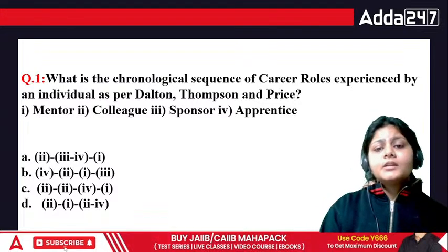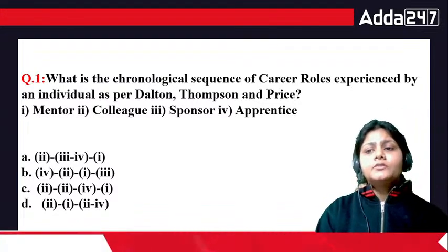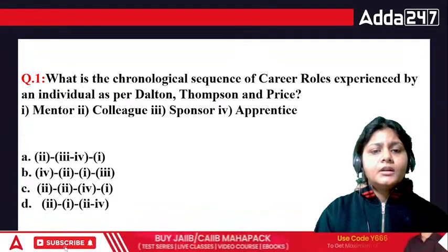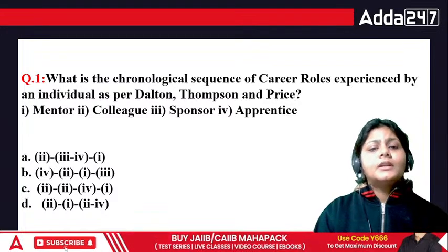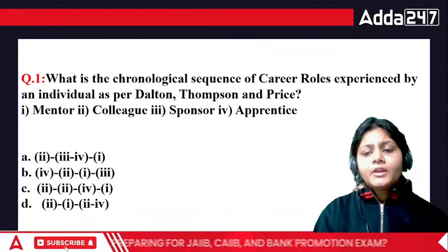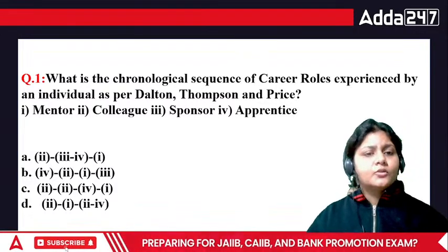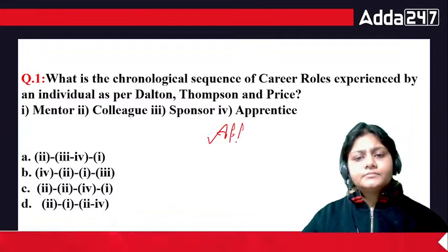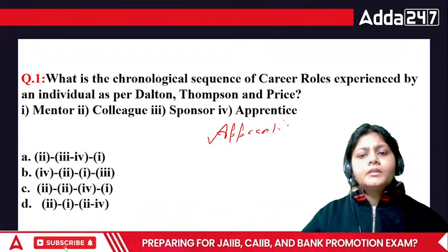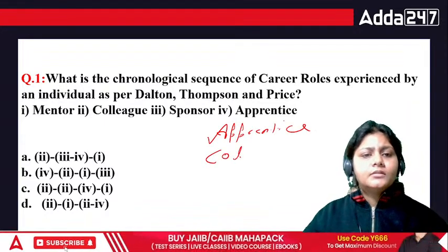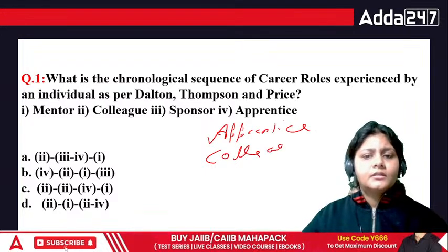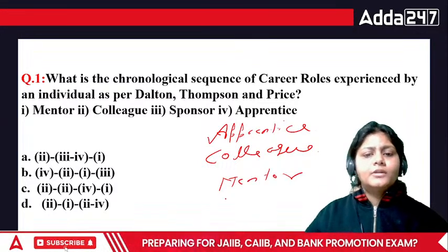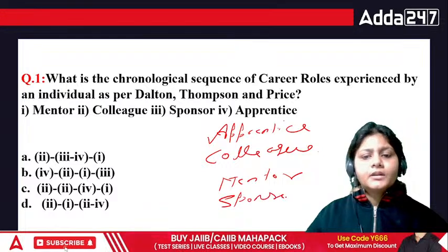This is the first question from Dalton, Thompson and Price. Dalton, Thompson and Price has given 4 types of career roles. Number 1 is Apprentice, number 2 is Colleague, number 3 is Mentor, and number 4 is Sponsor.